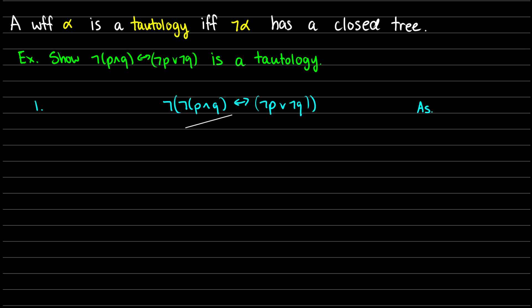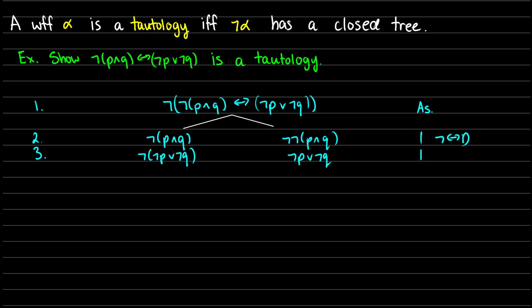Let's start these off with our branching paths. On the left-hand side, let's assume the left side is true and the right side is false. So we get 'not-p and q' as our first thing and 'not-(not-p or not-q)' as our second. On the other branching path, we get 'not-(not-p and q)' with the left side false, and 'not-p or not-q' with the right side true. This is line 2 and line 3, both coming from line 1 — not-biconditional decomposition.